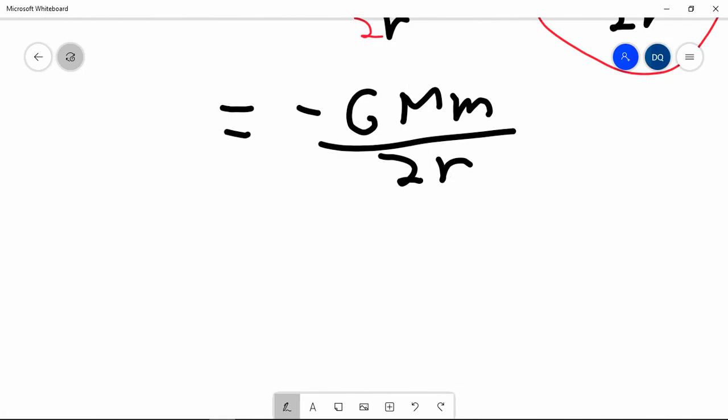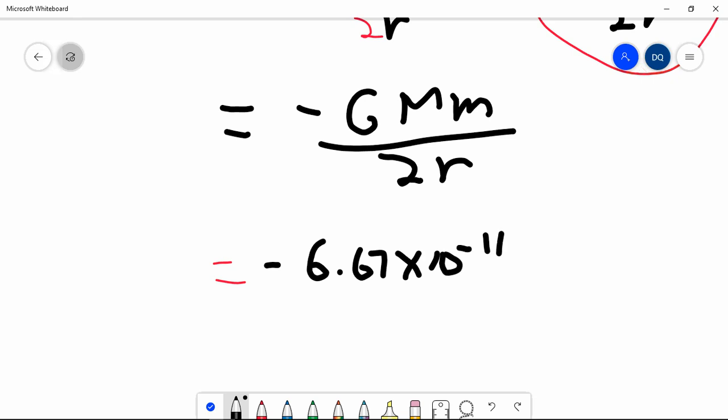Let me just put some numbers in here for you. So remember, G is 6.67 times 10 to the negative 11. So this is negative 6.67 times 10 to the negative 11. The mass of the Earth is 5.97 times 10 to the 24.